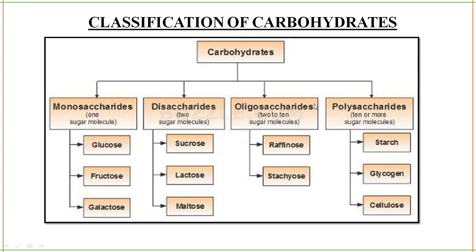Next is oligosaccharides, which can contain 2 to 10 sugar molecules — that is, 2 to 10 monosaccharides combined together. Examples are raffinose and stachyose. Then you have polysaccharides — more than 10 monosaccharides combined, such as starch, glycogen, or cellulose.